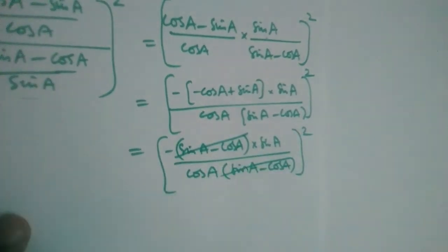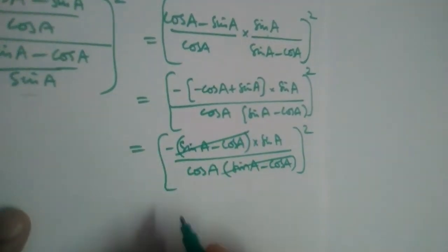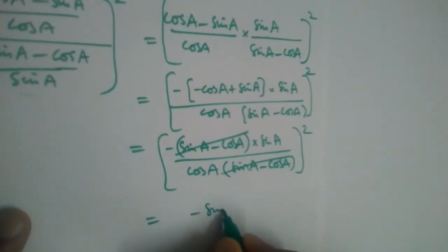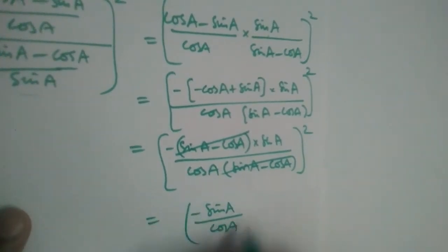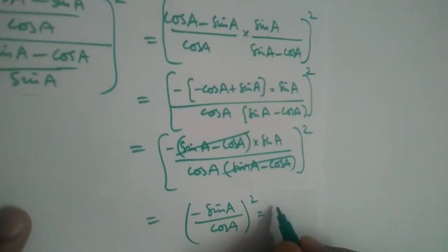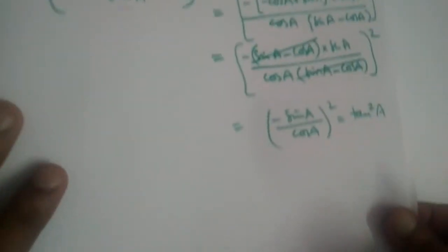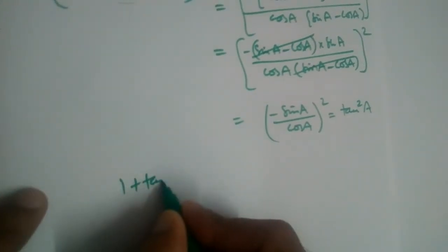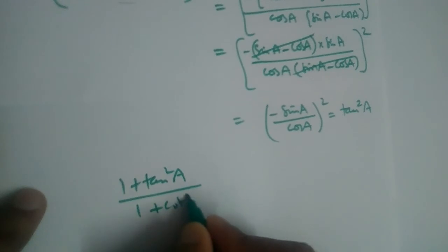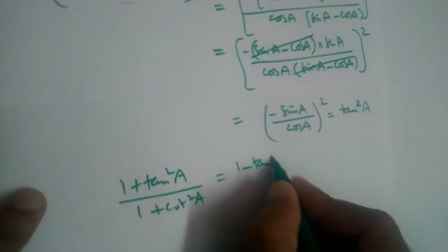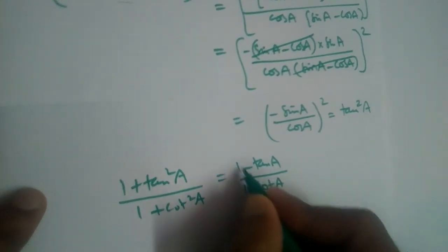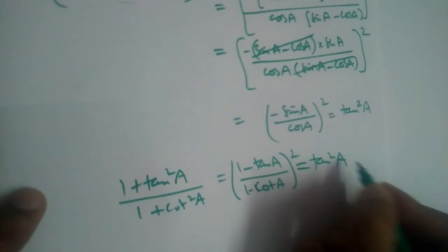What is left is (−sin a / cos a) whole square. Minus squared is plus, so we get sin²a / cos²a. Since sin/cos = tan, this equals tan²a. Therefore, (1 + tan²a) / (1 + cot²a) = (1 − tan a) / (1 − cot a) whole square = tan²a, which is proved.